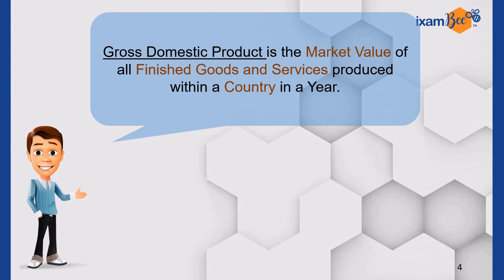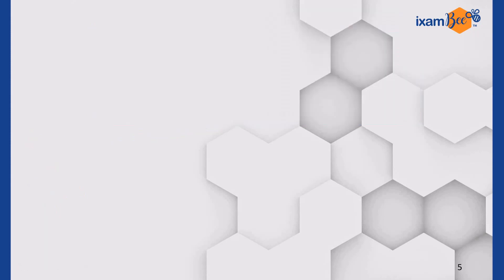First thing first, the definition. GDP is the market value of all finished goods and services produced within a country in a year. In simpler words, if we combine all the products and services that are produced in a country during a year, what we get is GDP.